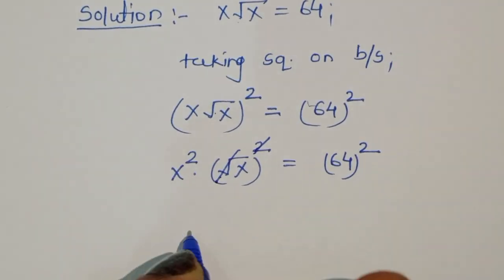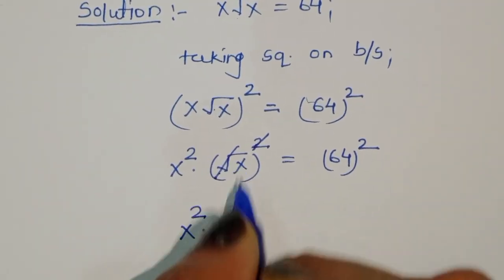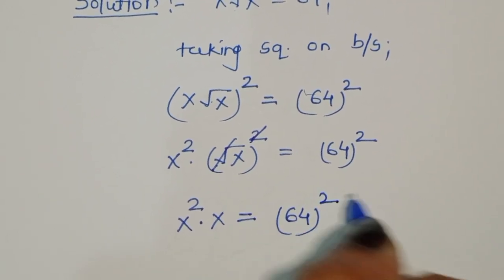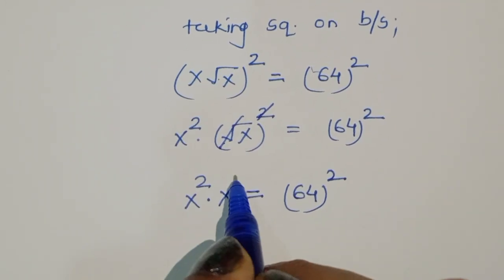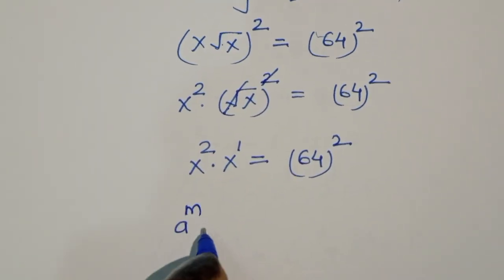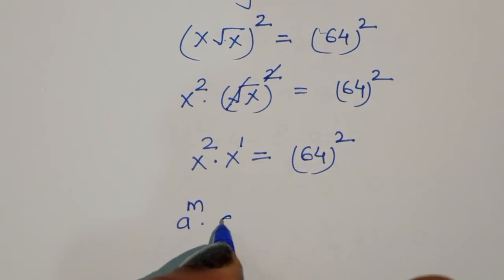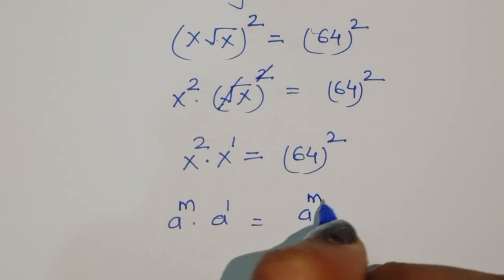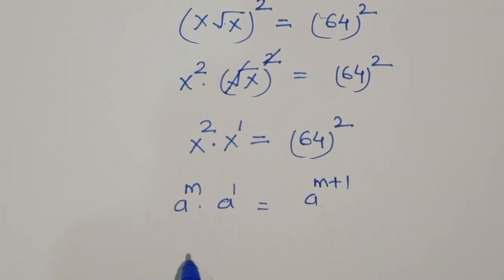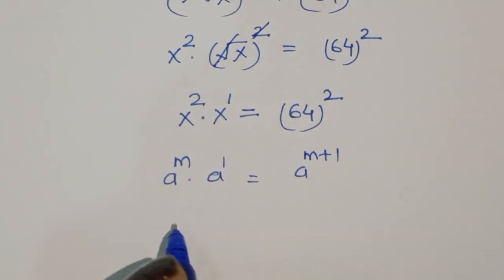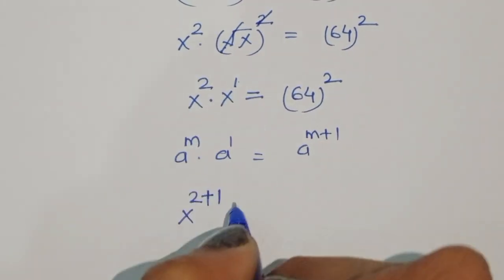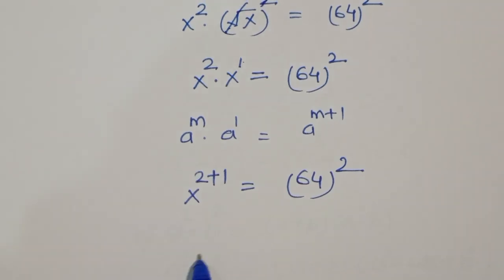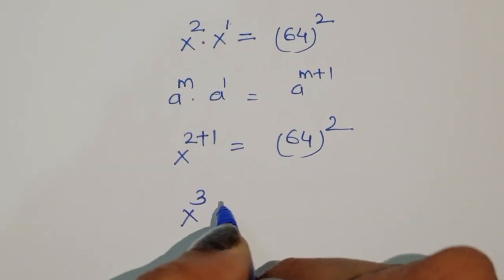Here the square and square root cancel. So the left side becomes x squared times x, equal to 64 squared. Now x squared times x to the power 1: using the rule a to the power m times a to the power 1 equals a to the power m plus 1, we get x to the power 2 plus 1, which is x cubed, equal to 64 squared.